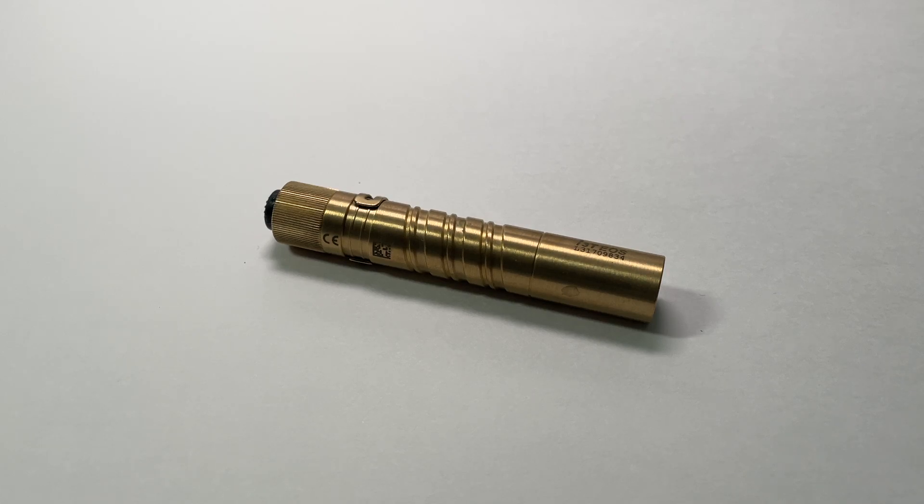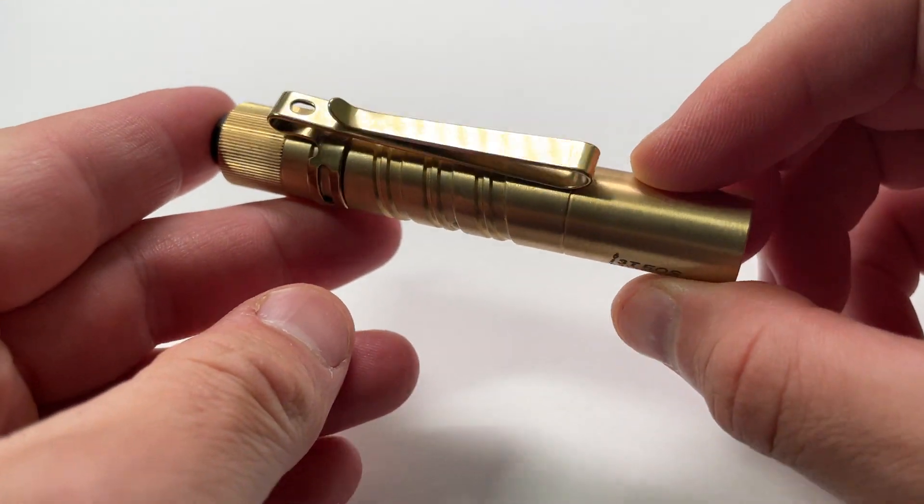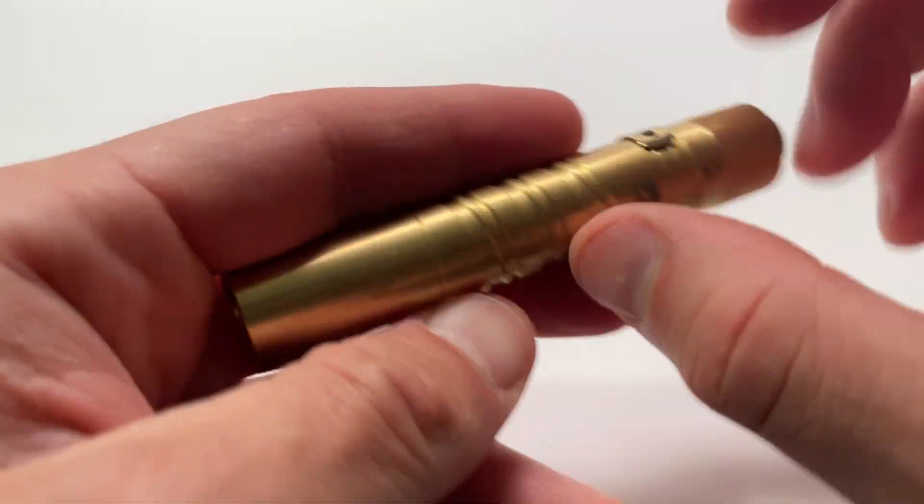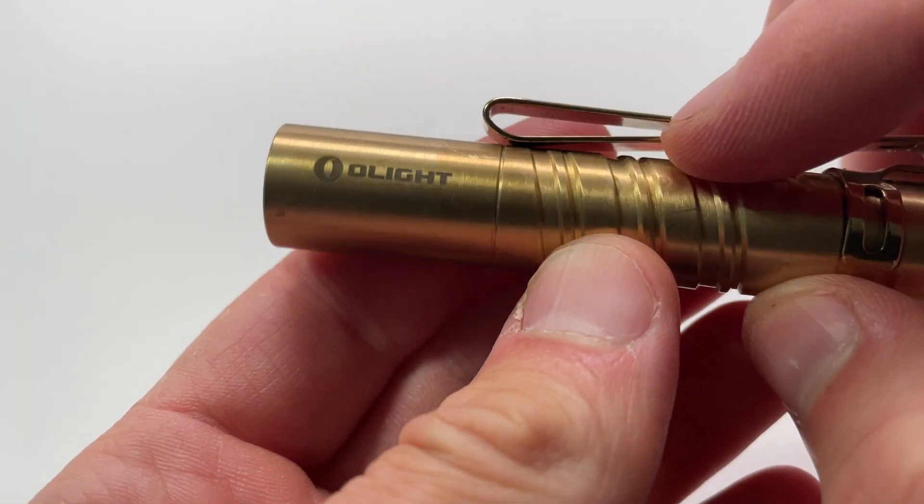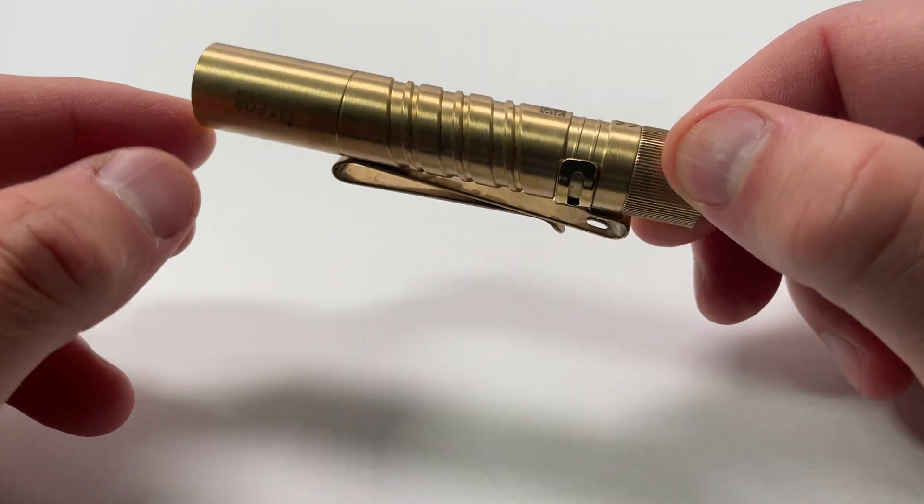This is a review of the Olight I3T EOS. It's a portable flashlight, kind of an everyday carrier EDC style flashlight from a company called Olight. You might have seen them before, but this is a very popular model on Amazon.